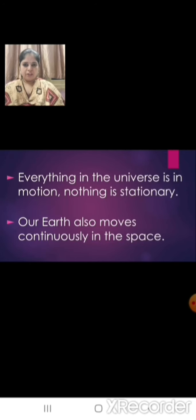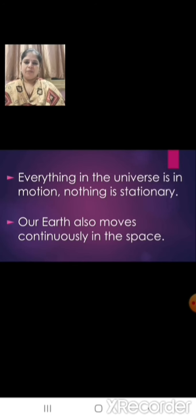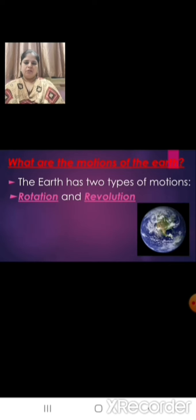Children, you know that everything in the universe is in motion. Nothing is stationary. That means everything moves and our earth also moves continuously in space. So what are the motions of the earth? The earth has two types of motions: rotation and revolution.